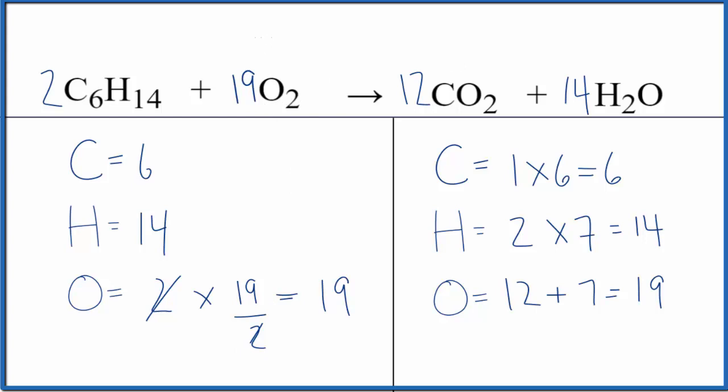If we were to write the states, it would look like this. Hexane, that's a liquid. Oxygen's a gas. Carbon dioxide's a gas. And because it's combustion, it's exothermic. So the water would be a gas as well, at least initially.